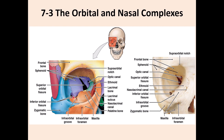The lateral wall is made by the zygomatic bone, and the inferior wall is made by the maxilla. You can also see the infraorbital foramen and the infraorbital groove, both part of the maxilla. Medially, you can see the ethmoid bone, located more posteriorly, and the lacrimal bone with the lacrimal sulcus and lacrimal canal — both located anterior to the ethmoid.